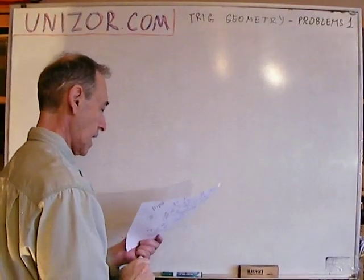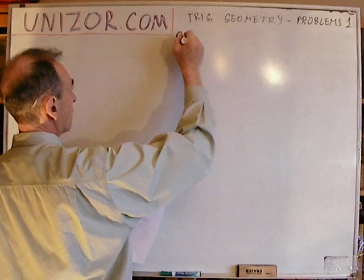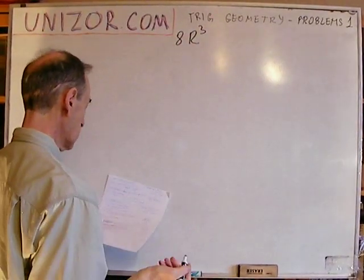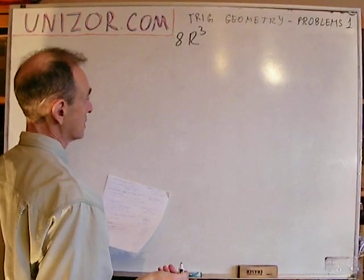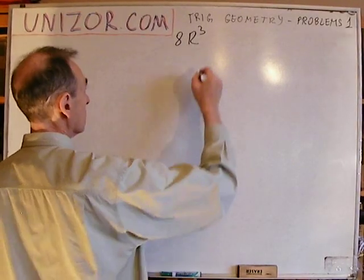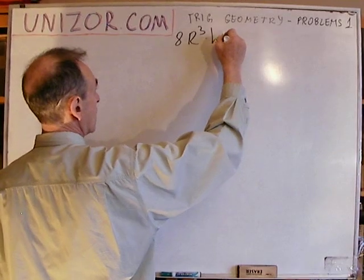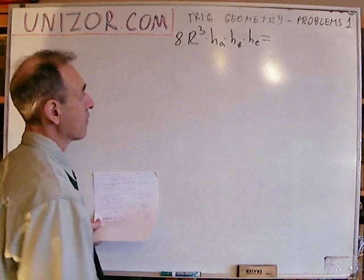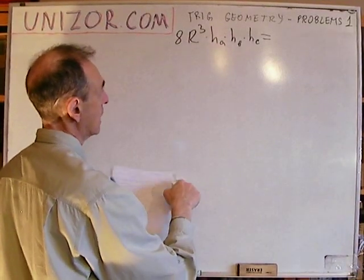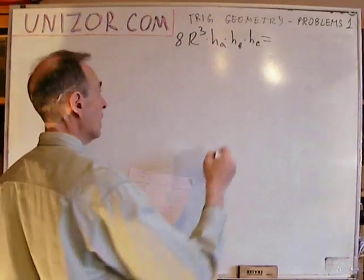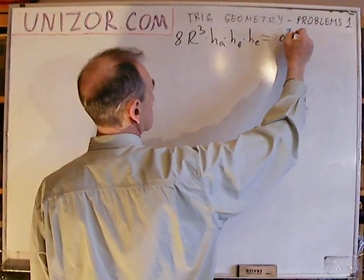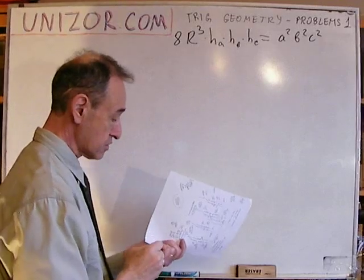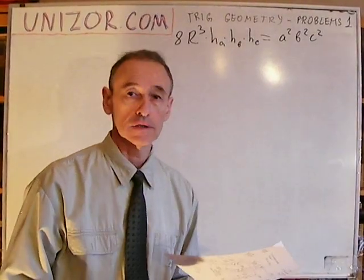And I have the last problem. Prove that R (the radius of the circumscribed circle) times HA times HB times HC — the three altitudes corresponding to sides A, B, and C — equals A²B²C² divided by something. We have to prove this is true for any triangle.